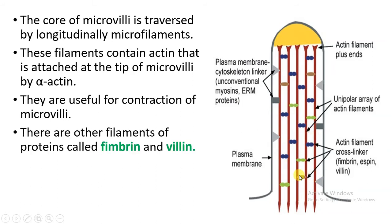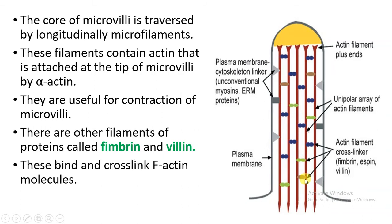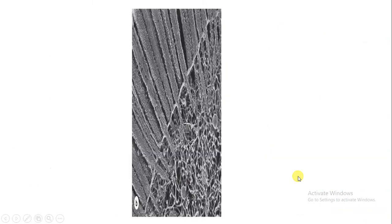In the cross-linkage there is a presence of some proteins. Those are called fimbrin and villin. They help in the cross-linkage with the filamentous actin, that is the F-actin molecule.